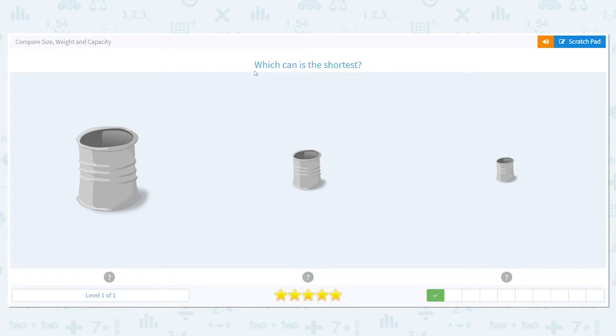Next question. Which can is the shortest? Same thing. Think of Baby Bear. Which can here is the smallest? This one would be for Papa Bear, this one would be for Mama Bear, and this one's the shortest for Baby Bear.